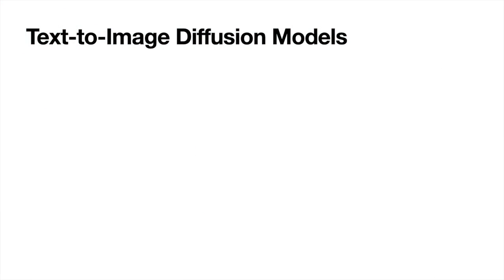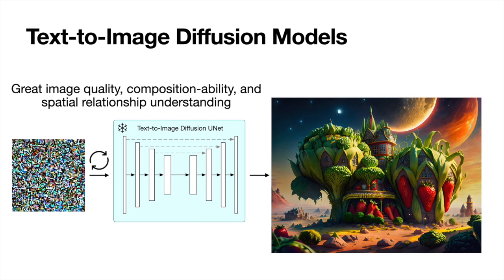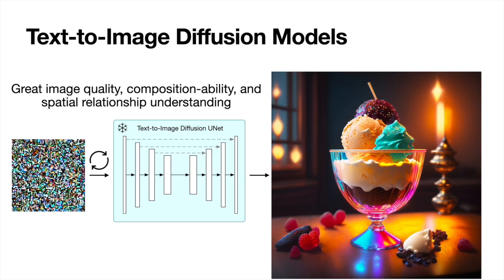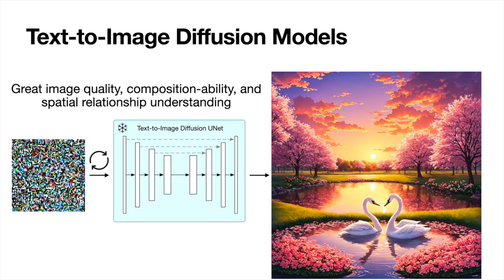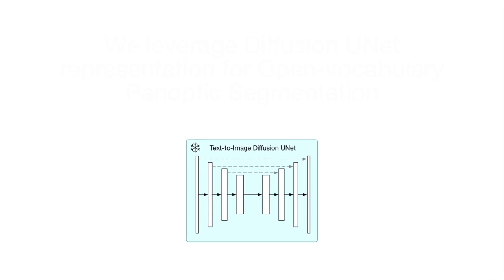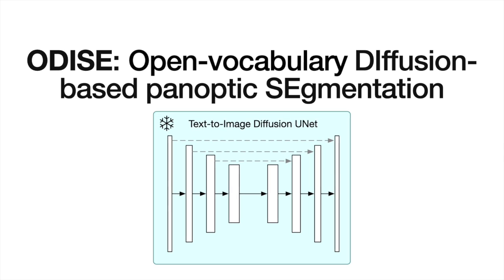In the past year, text-to-image generation using diffusion models trained on internet-scale data has revolutionized the field of image synthesis. It offers unprecedented image quality, generalizability, compositionability, spatial relationship understanding, and semantic control via the input text. In this work, we propose to leverage the diffusion unit of a text-to-image diffusion model for Open Vocabulary Panoptic Segmentation. The proposed model is termed Odyssey.